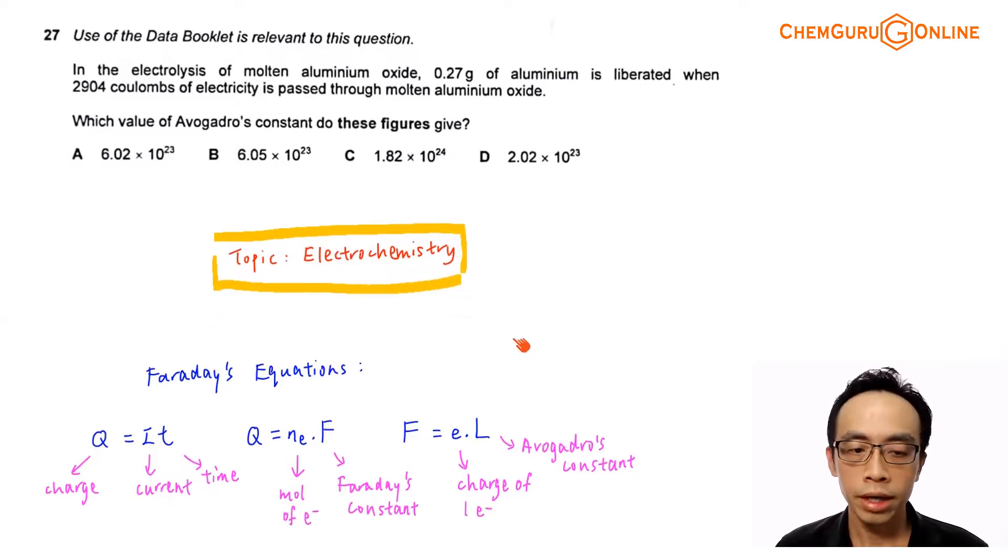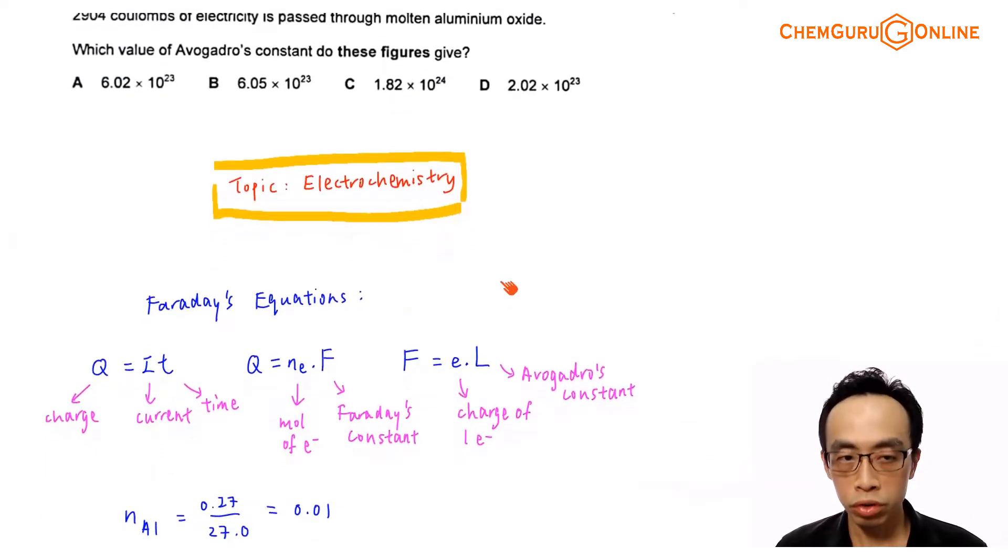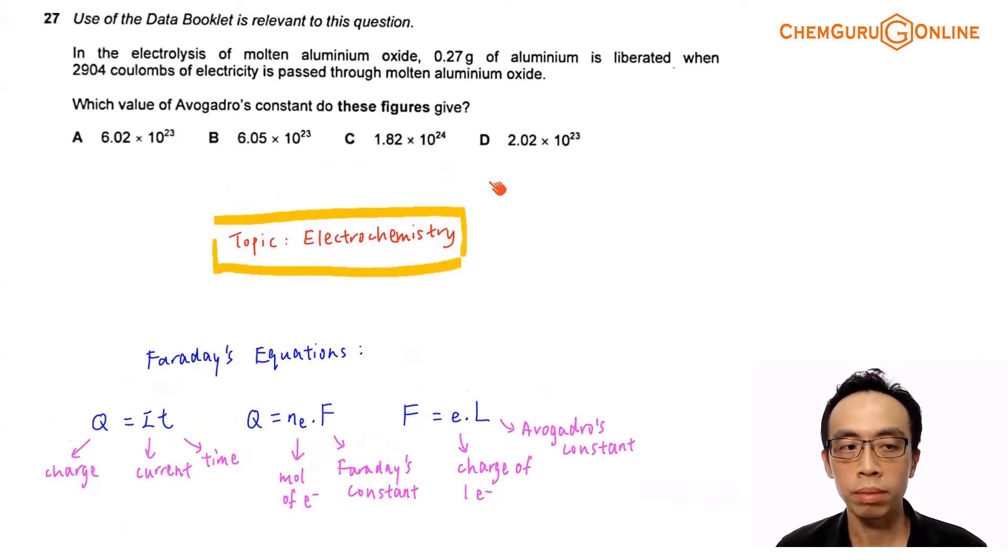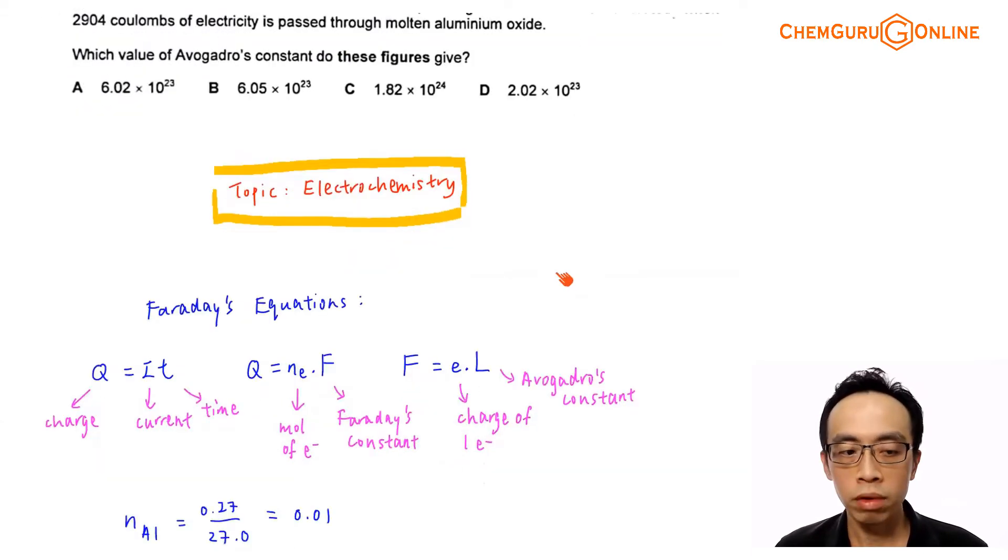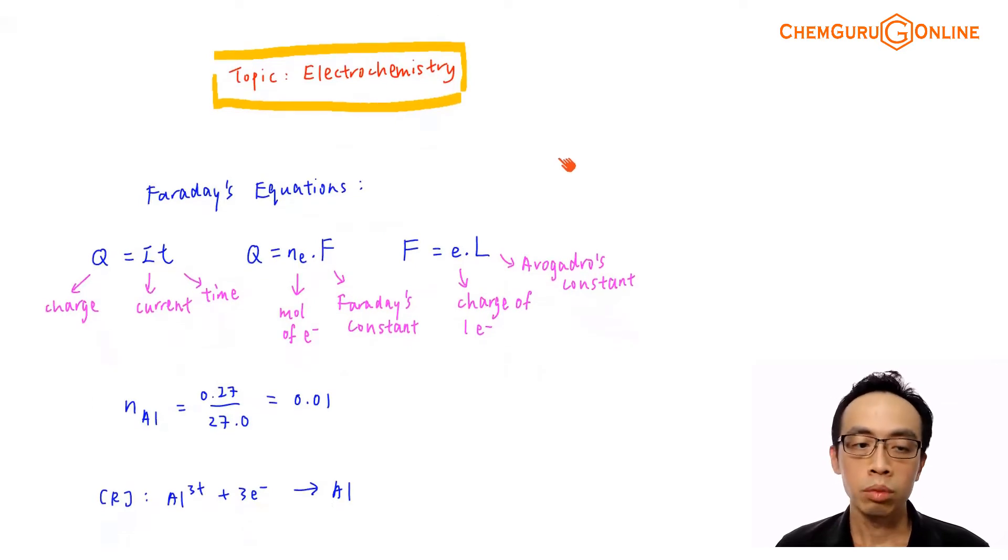Now the topic tested in this exercise is under electrochemistry, which is pretty obvious because we talk about electrolysis of molten aluminum oxide. So let us just recap the equations that we will find useful when we do calculation questions for electrochemistry.